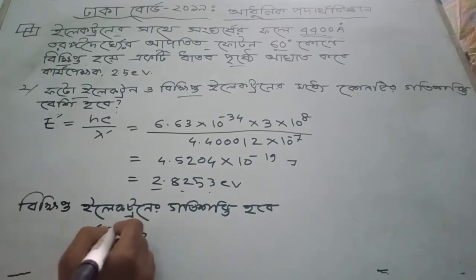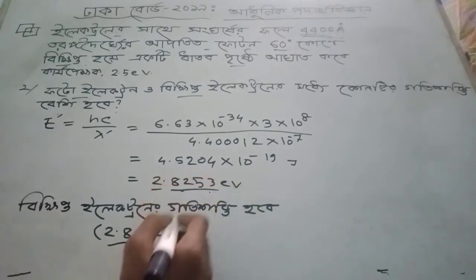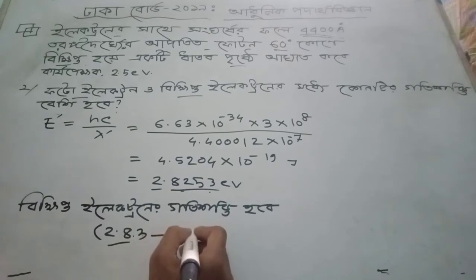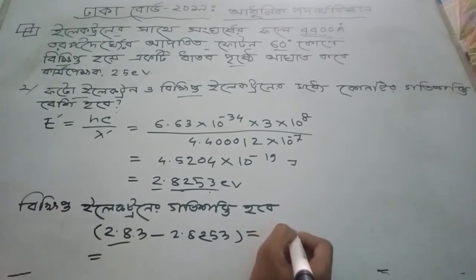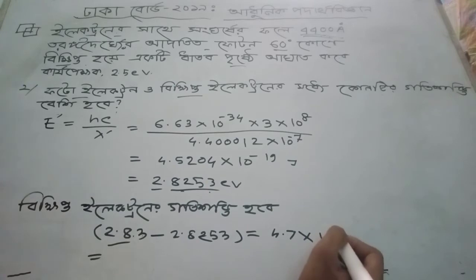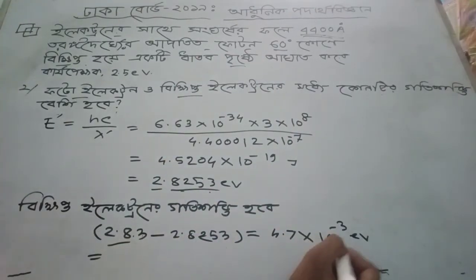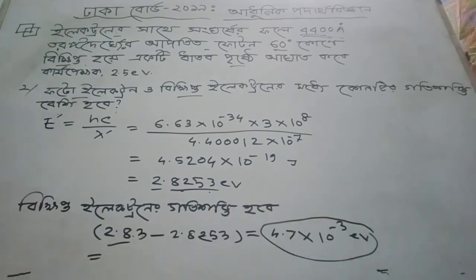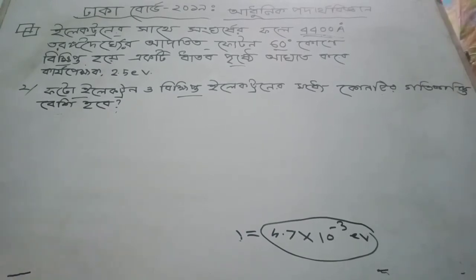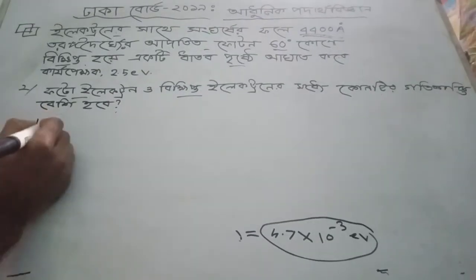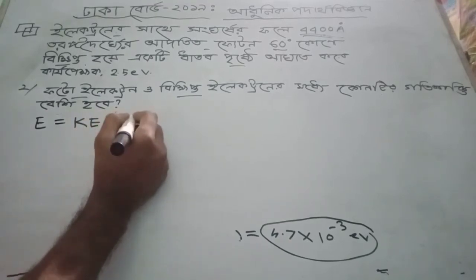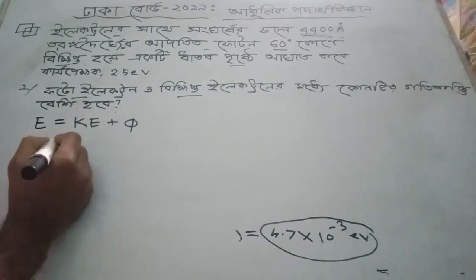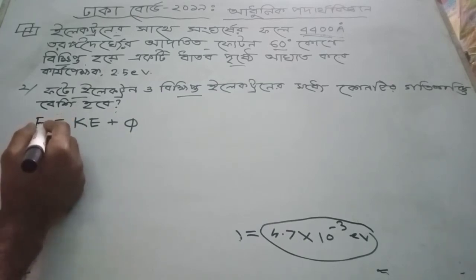This can be 2.83, and this can be 2.823, and this can be 2.8253. For the photoelectric effect caused by this: 5.525 and this can be 2.825 electron volts.